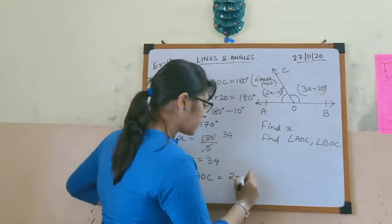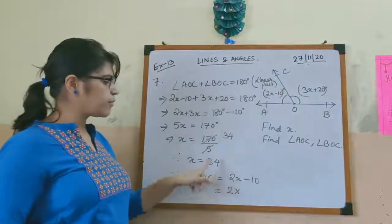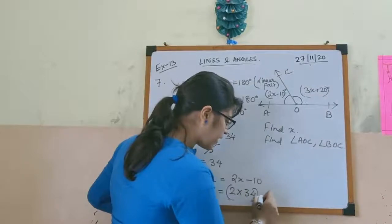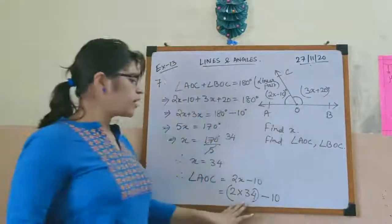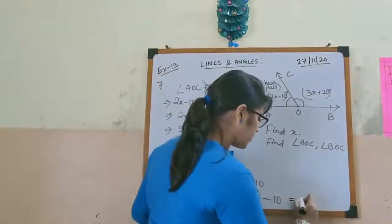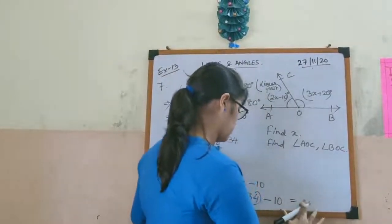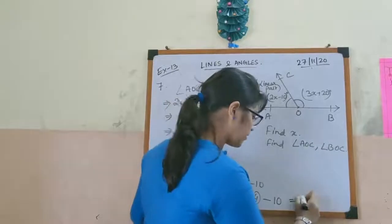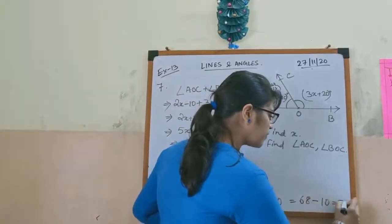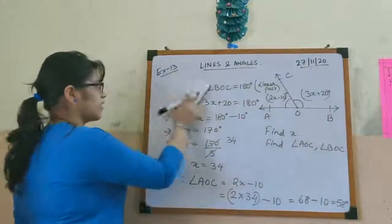Now angle AOC equals 2x minus 10. Substituting x equals 34: 2 into 34 equals 68, and 68 minus 10 equals 58 degrees. So angle AOC is 58 degrees.